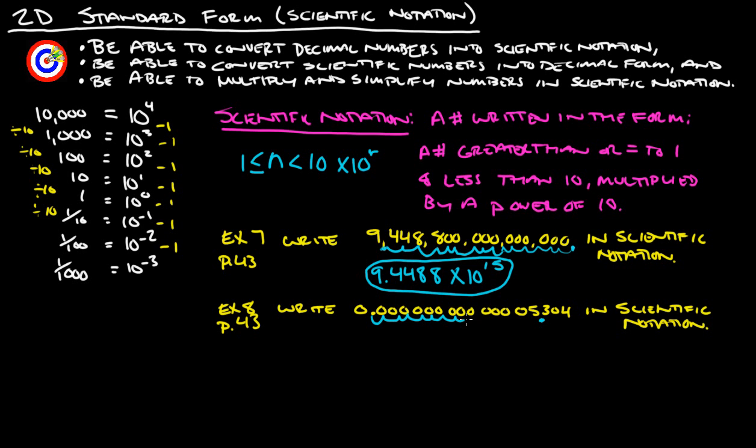Now we have to figure out how many decimal spots to move that over. So 1, 2, 3, 4, 5, 6, 7, 8, 9, 10, 11, 12, 13, 14 spots to the right. We would write that as 5.304 times 10 to the, we made a really small number into a bigger number, so to compensate, we have to write this as a negative power, negative 14th power.